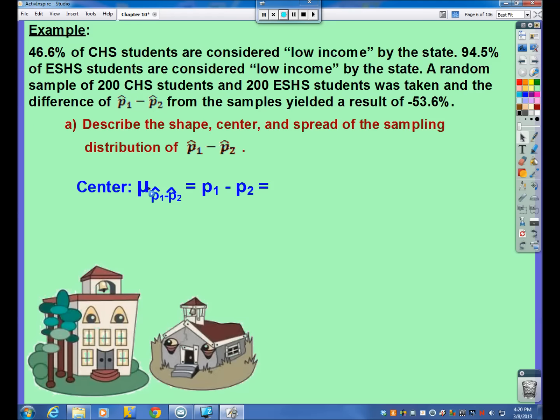Part two, the center. We want to know what is the mean of all possible combinations of P1 minus P2 hats for many, many random samples. And I mentioned earlier, that's just the difference of your population proportions. So, those numbers are the 0.466 and the 0.945. So, we would expect, this specific number is what we would expect to happen. But it's not necessarily going to happen. There's always going to be some variation going on. So, we would expect a difference of 47.9%. What we saw was 53.6%. So, then we will discuss in a bit here, are these two, or is this, is our sample difference proportion here, is it far enough away from what we would expect to happen that we really question whether these numbers we were given are really true or not.